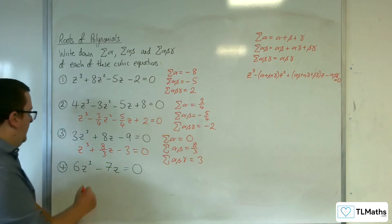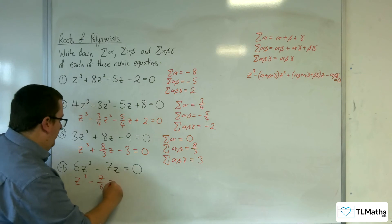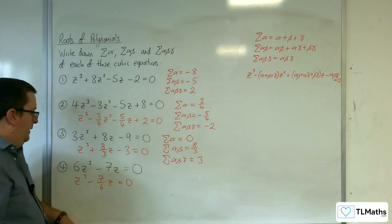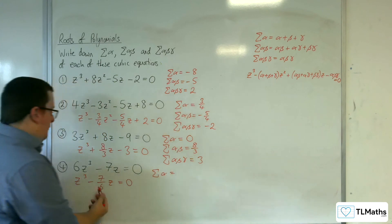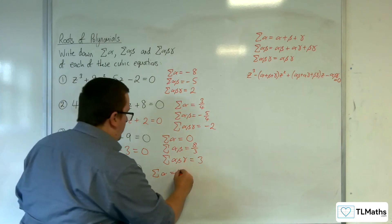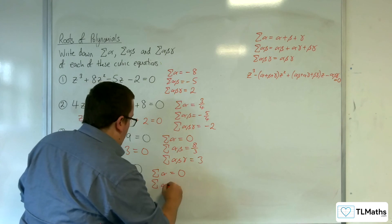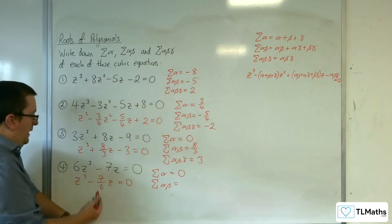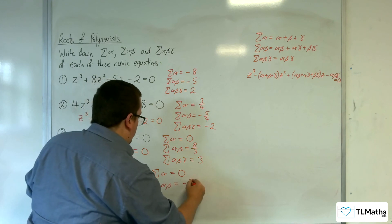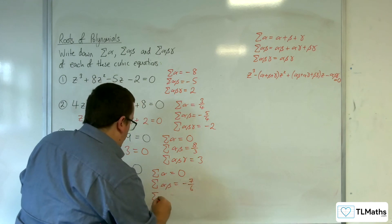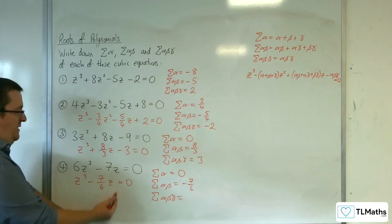Last one — divide through by 6 first. So: z cubed, take away seven sixths z, equals 0. The sum of the roots — coefficient of z squared is 0 again, so that's 0. The sum of the product pairs is going to be minus seven sixths. And the product of the three roots is going to be 0.